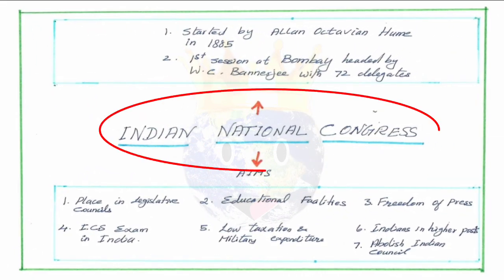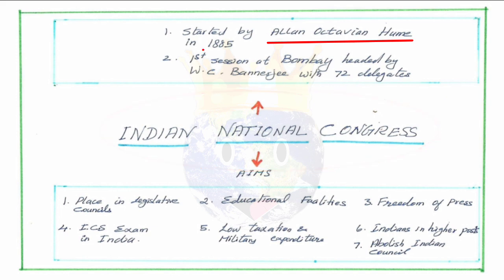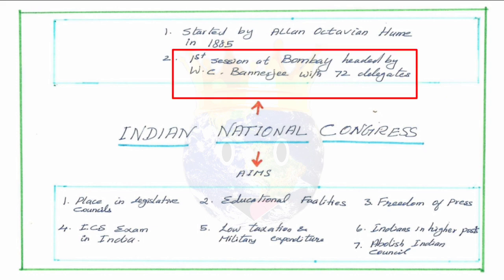The Indian National Congress was started by the efforts of Allan Octavian Hume in 1885, marking the starting point of the INC. The first session of the Congress was held at Bombay, headed by Womesh Chandra Banerji, with 72 delegates from all over India, including Dadabhai Naoroji, Surendranath Banerji, Madan Mohan Malaviya, and many more leaders.